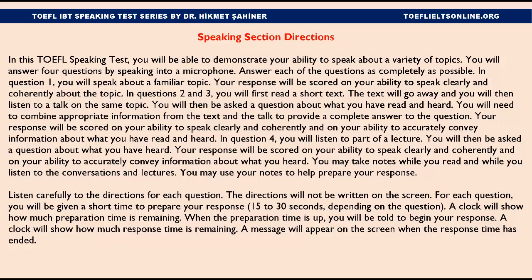In Questions 2 and 3, you will first read a short text. The text will go away and you will then listen to a talk on the same topic. You will then be asked a question about what you have read and heard. You will need to combine appropriate information from the text and the talk to provide a complete answer to the question. Your response will be scored on your ability to speak clearly and coherently and on your ability to accurately convey information about what you have read and heard.